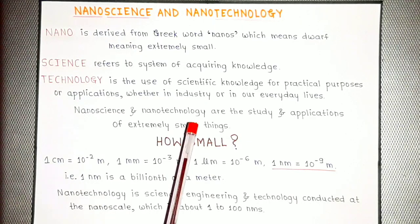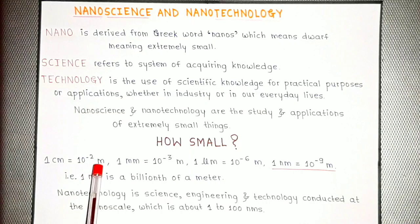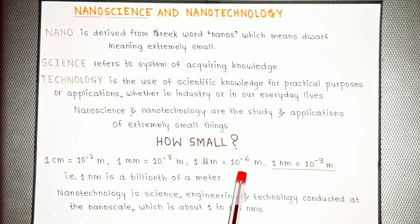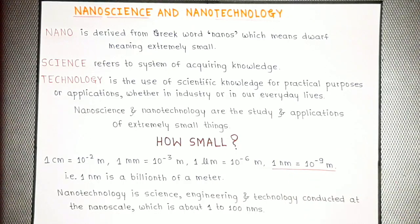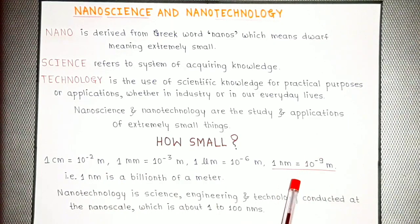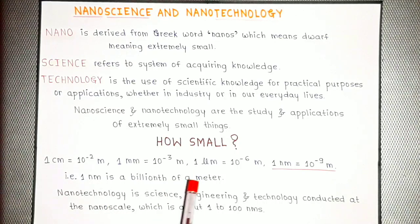Now the question arrives: how small? To find this answer, let's take a look at the metrics table. We know that 1 centimeter equals 10 raised to minus 2 meters, 1 millimeter equals 10 raised to minus 3 meters, 1 micrometer equals 10 raised to minus 6 meters, while 1 nanometer equals 10 raised to minus 9 meters — that is, one billionth of a meter. So nanotechnology revolves around this scale range, conducted at the nanoscale, which is about 1 to 100 nanometers.